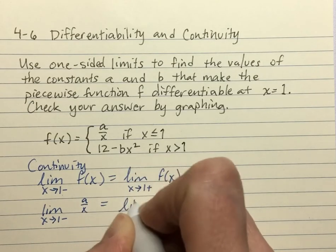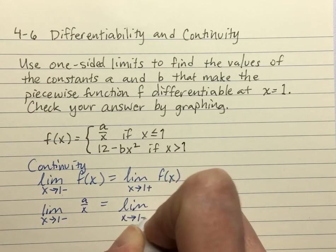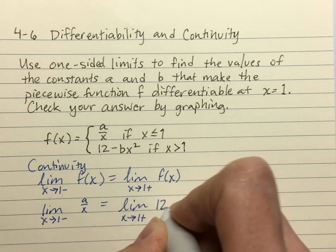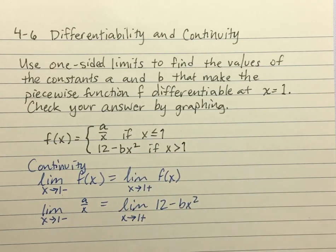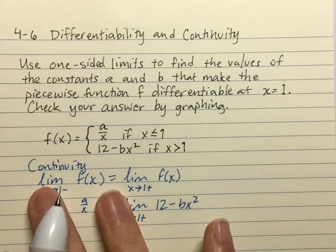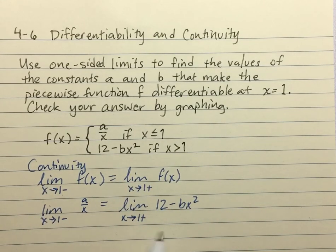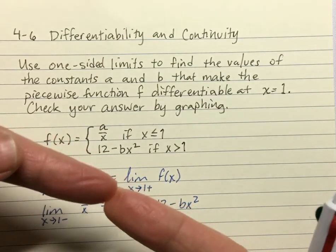And then the right side, since we're approaching 1 from the right, is the 12 minus bx squared part. And you all know me well enough to know that I'm strict on that notation. We need this limit notation. These two functions aren't equal to each other, except they're going to equal each other as you approach 1 from each side.